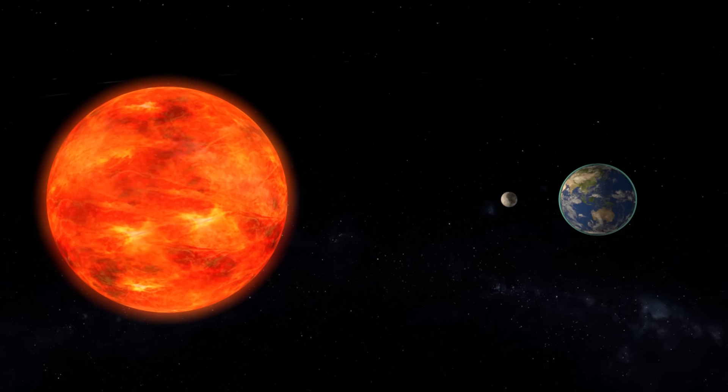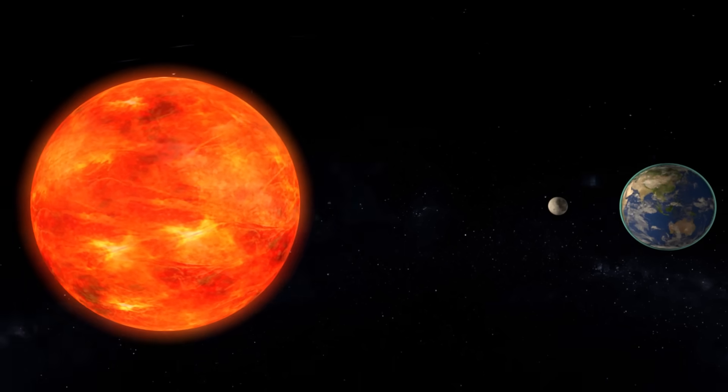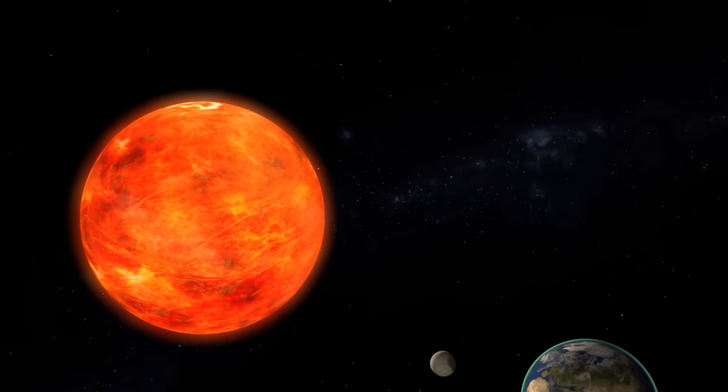On Earth, we can see two types of eclipses. Solar eclipse, like this one right here, and lunar eclipse, which would occur like this.